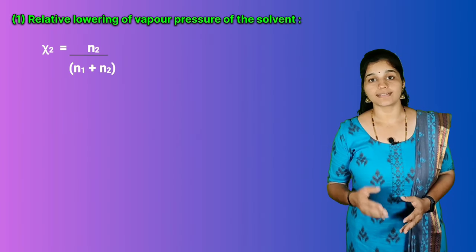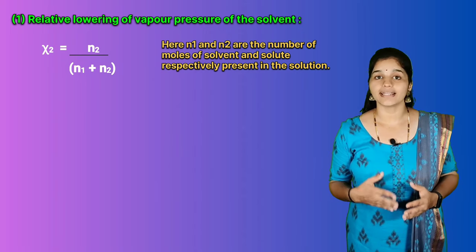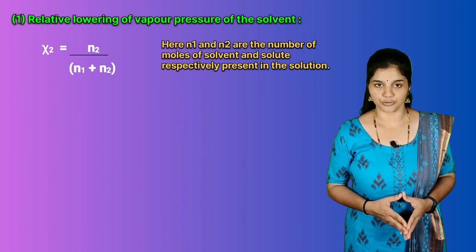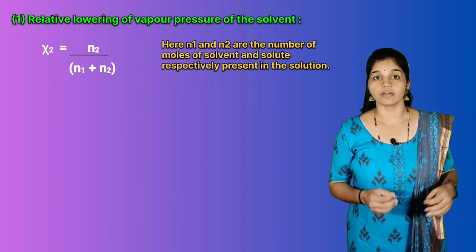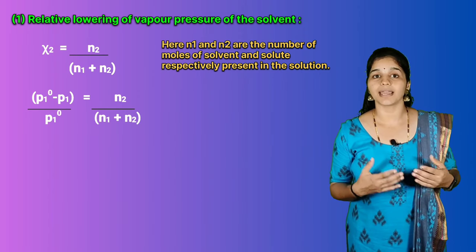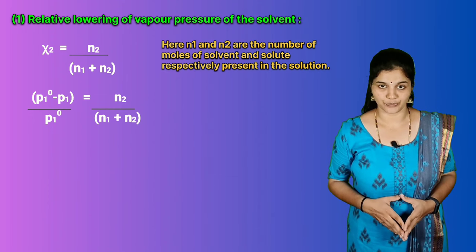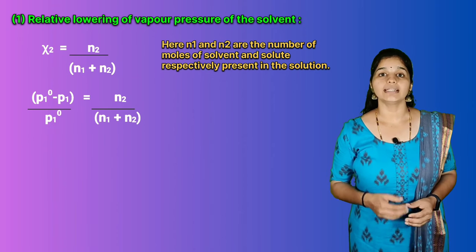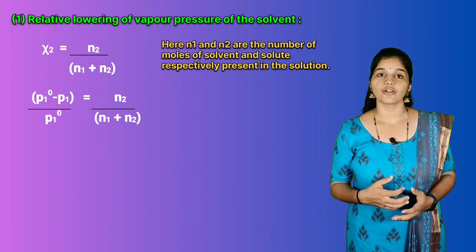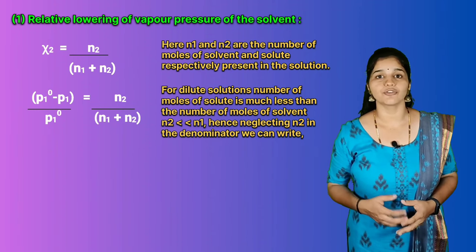ΔP1/p1⁰ = (p1⁰ − p1)/p1⁰ = χ2. This ratio ΔP1/p1⁰ is called relative lowering of vapor pressure. It tells us how much decrease is observed in vapor pressure of the solution with respect to vapor pressure of the pure solvent. We can write χ2 = n2/(n1 + n2), where n1 and n2 are the number of moles of solvent and solute respectively. So the expression for relative lowering of vapor pressure is (p1⁰ − p1)/p1⁰ = n2/(n1 + n2).